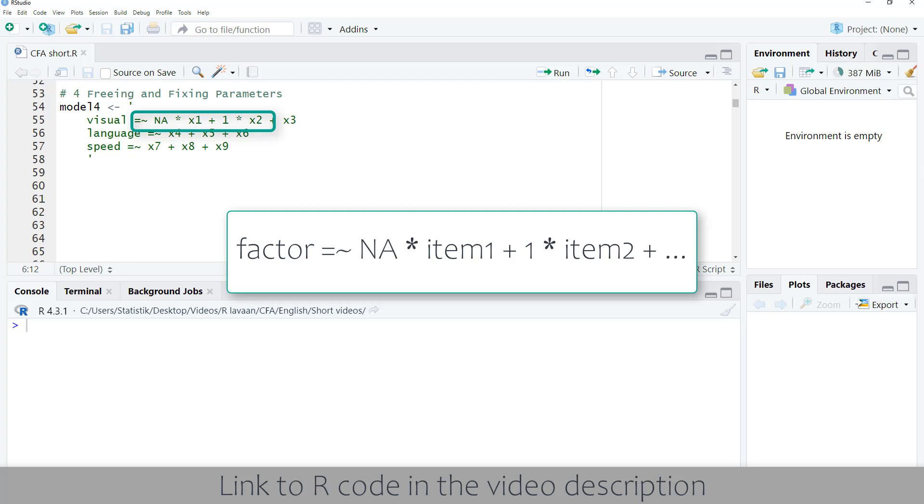By default, the loading of the first item is fixed to 1. We could change that by multiplying it with NA, and instead multiplying another item with 1.